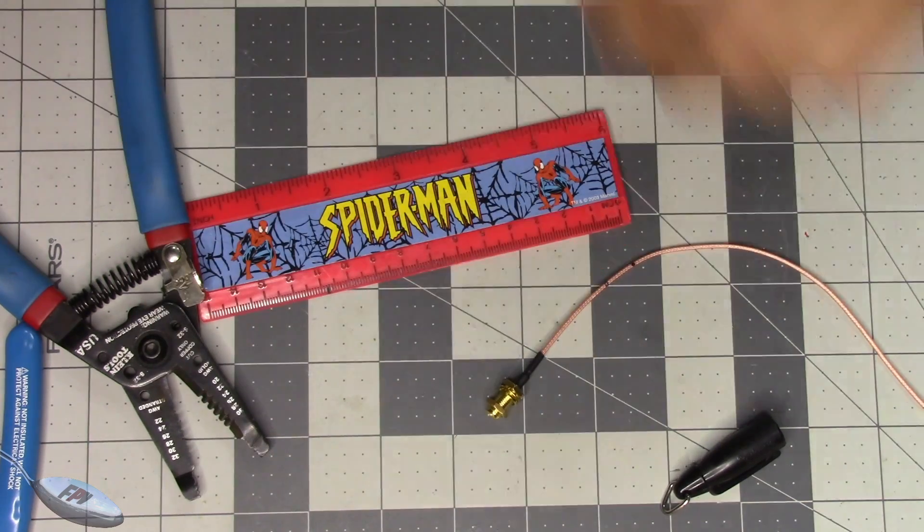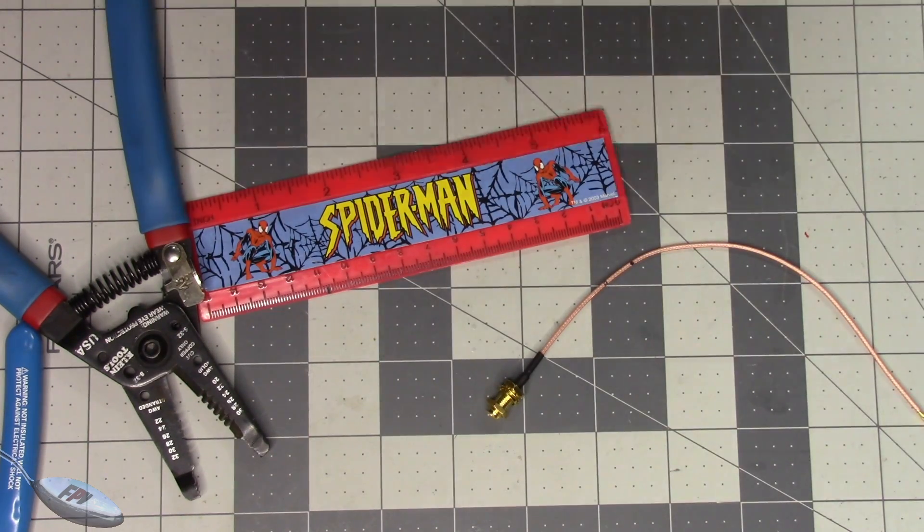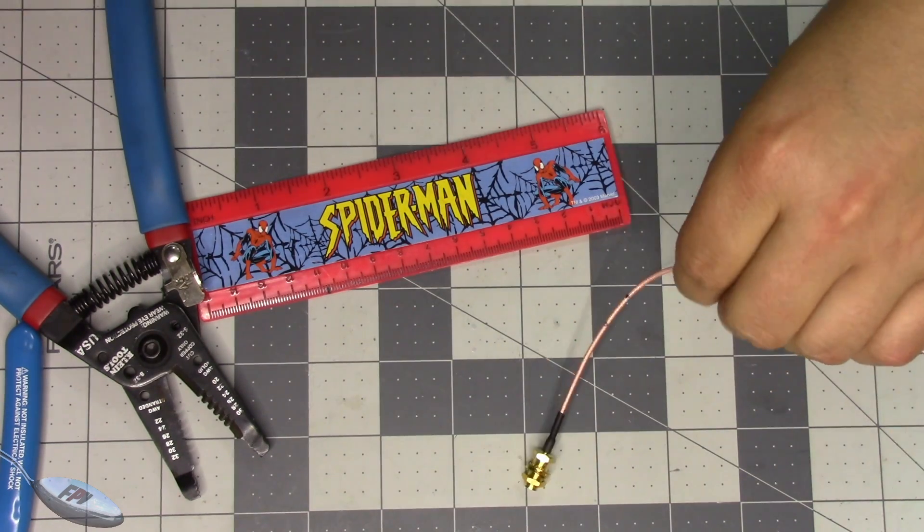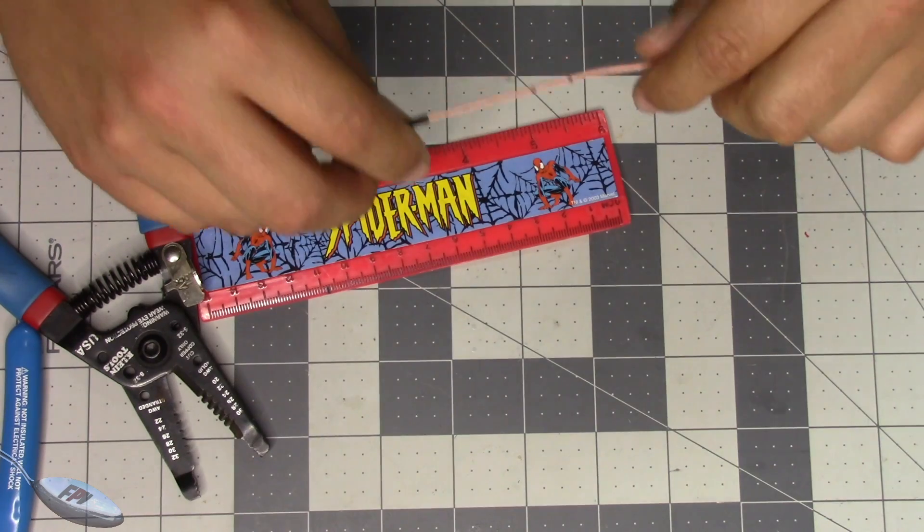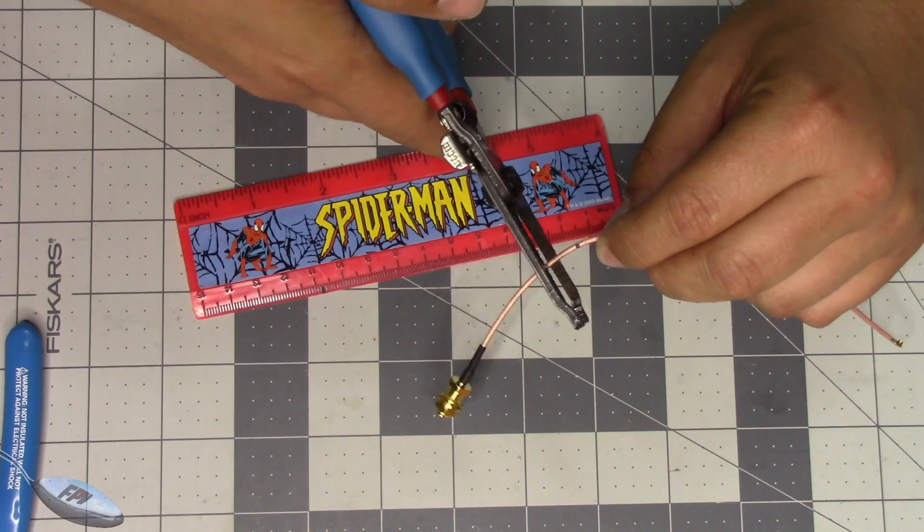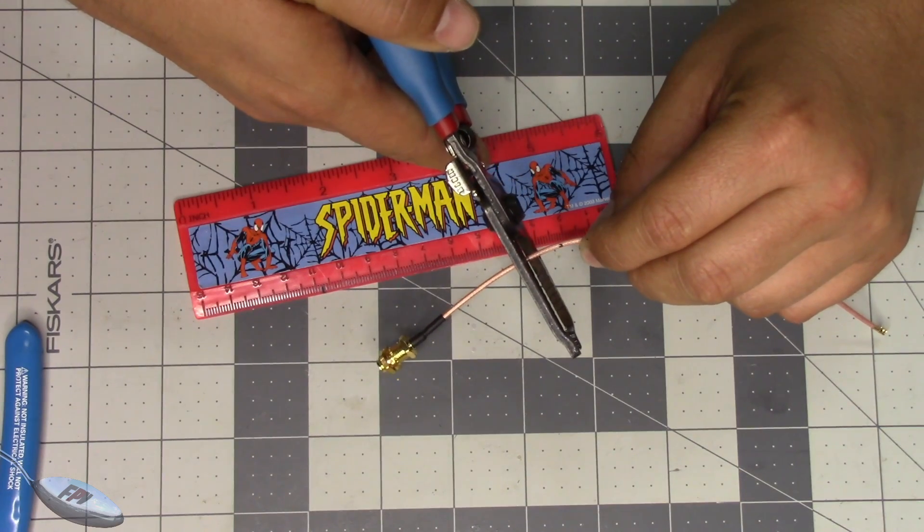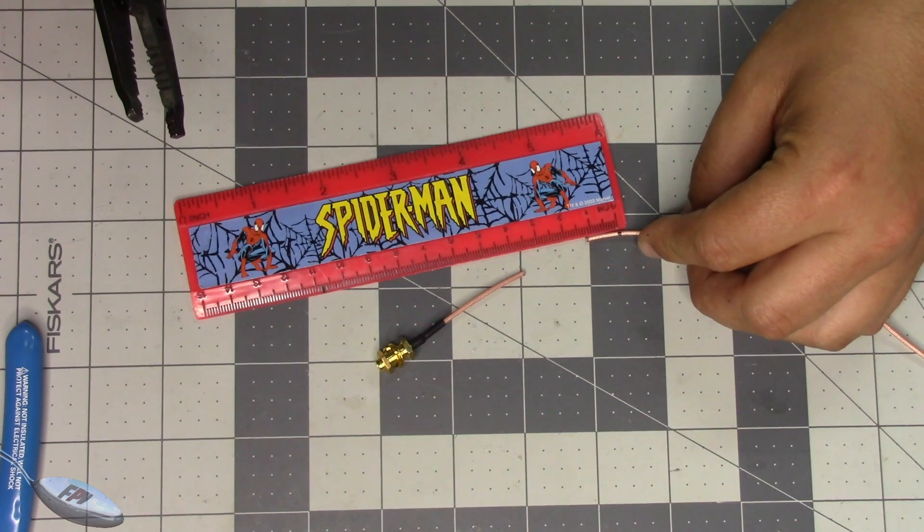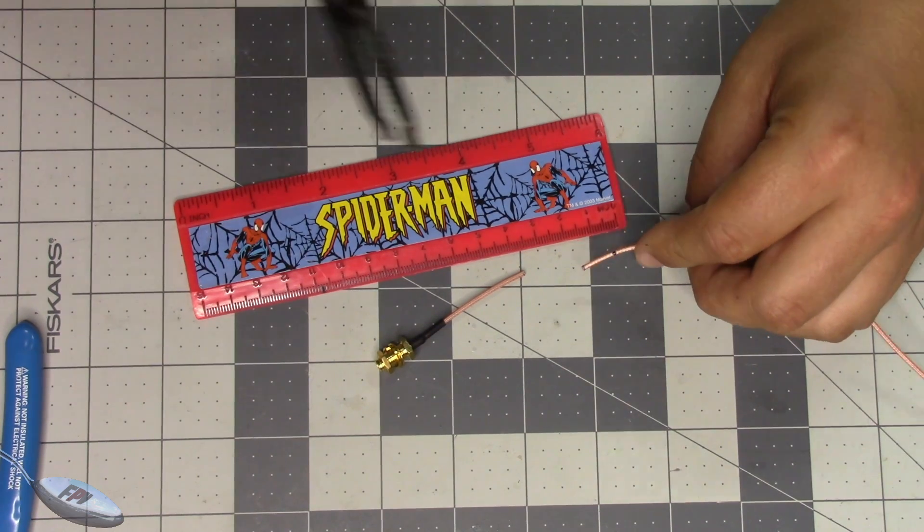And this will be a quarter wave dipole. And if you want to do a half wave, it's just double that. But that's going to be a quarter wave dipole for 5.8. So we'll just cut it. And then, you know, measure twice kind of thing. Yep.